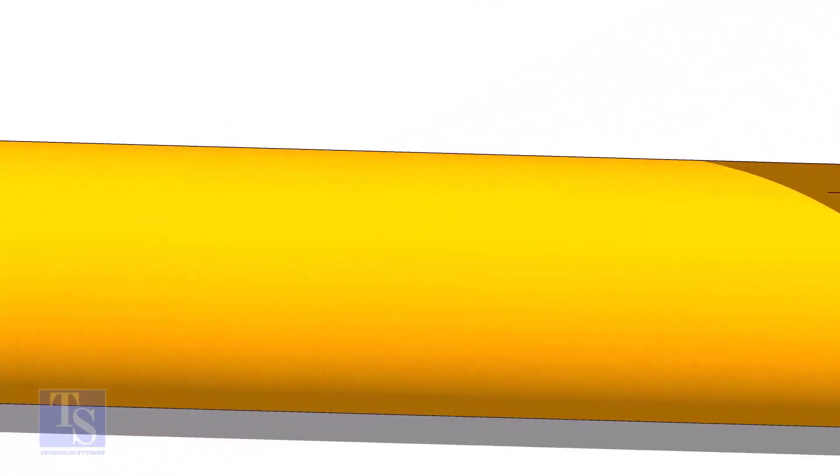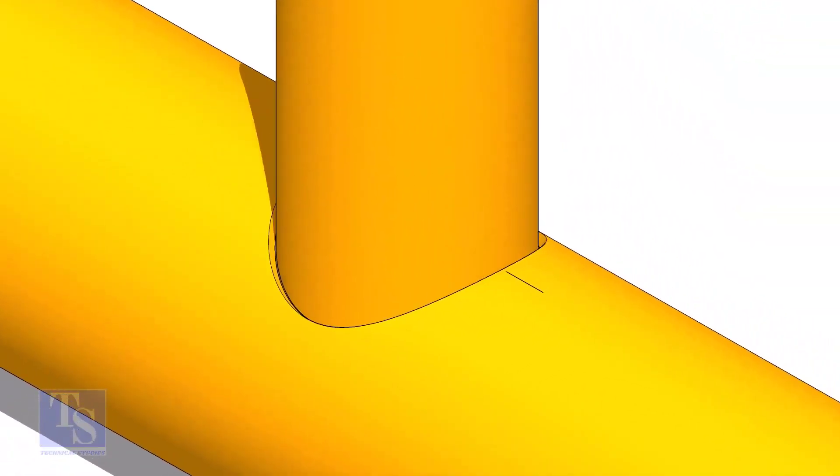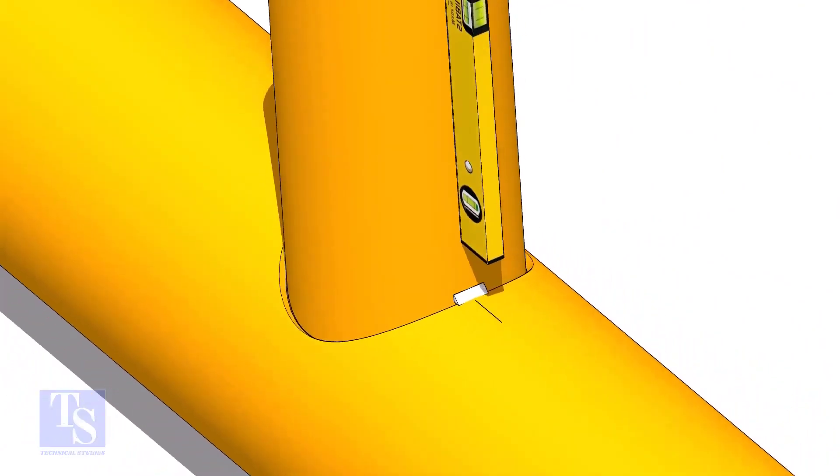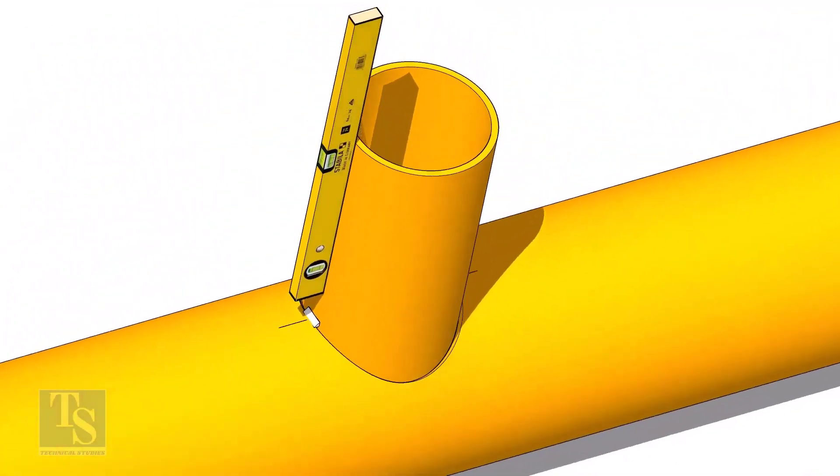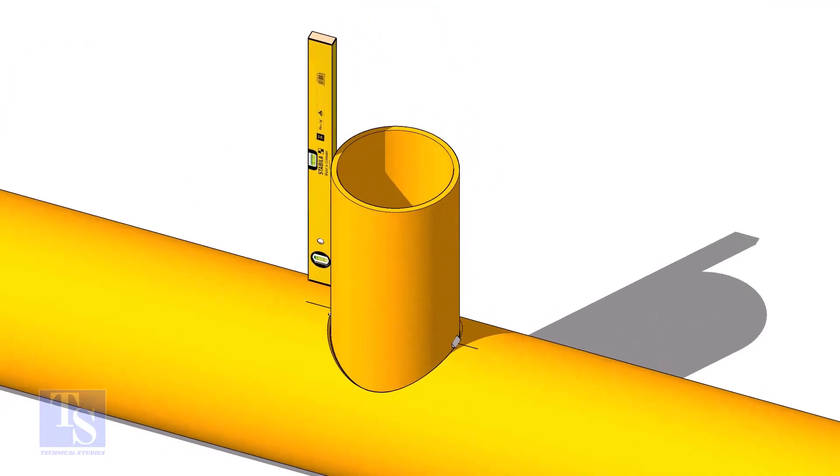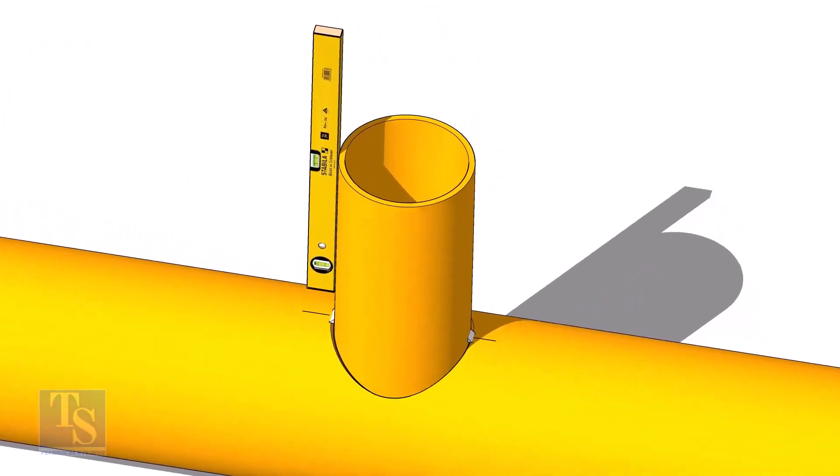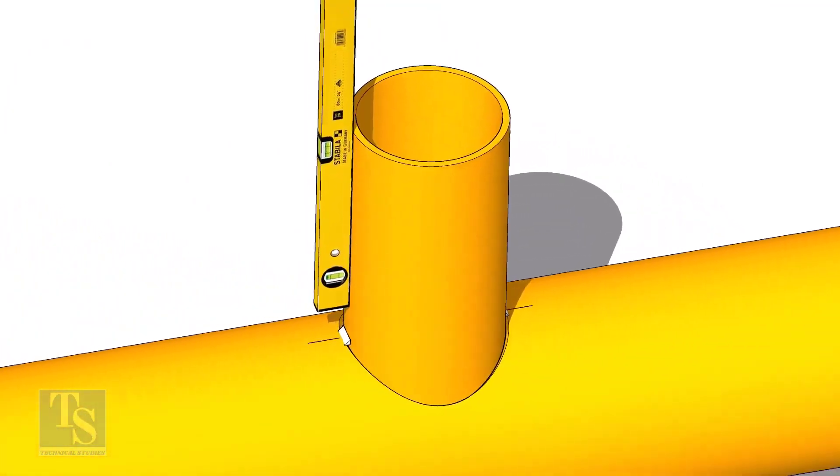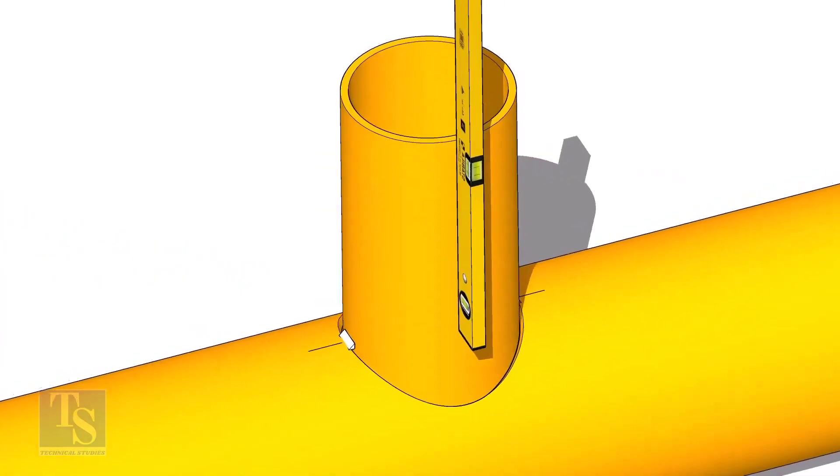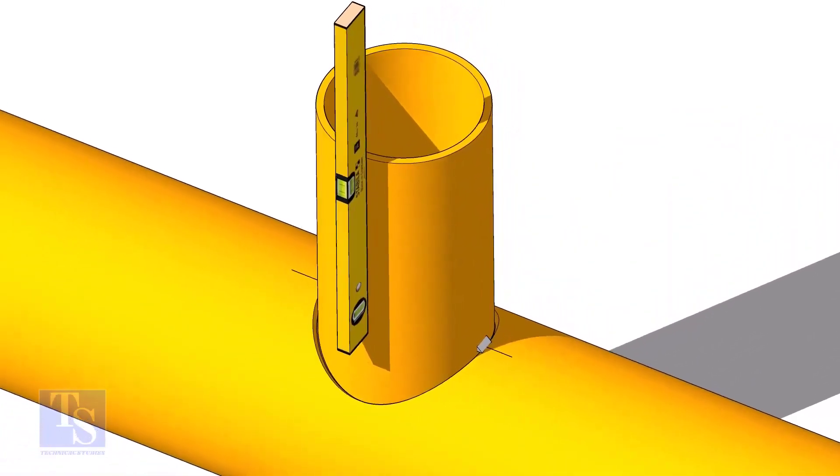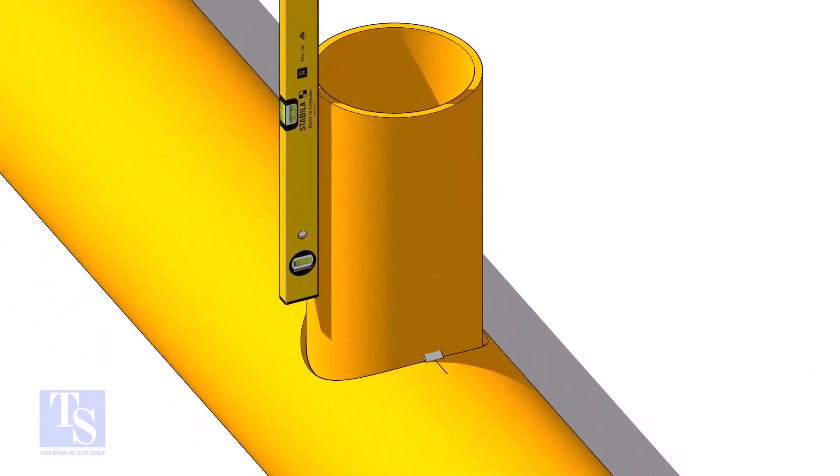Level the header. Put the branch in its position. Tack weld at one side and check the level of the branch. If the level is correct, tack weld on the other side. Make level of the other face of the branch and tack weld on both sides.